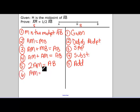Then step six. AM equals one half of AB. And that reason is division.